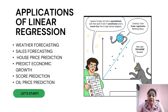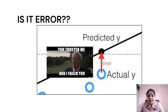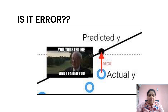Let's see the different applications of linear regression. It is very commonly used in every application nowadays — whether it is weather forecasting, sales forecasting, house price prediction, prediction of economic growth, predicting the scores of a cricket team, marks of a student, or oil price prediction. Now, looking at this example: the black dot represents a predicted value and the blue dot represents the actual value of a data point. So the difference between this blue dot and the black dot is called an error — but is it actually an error or is it a residual?